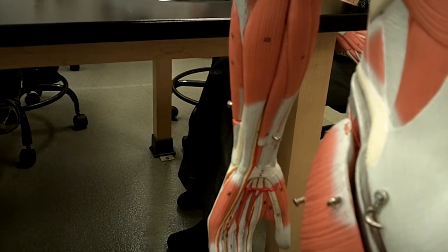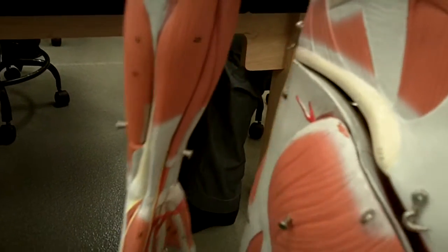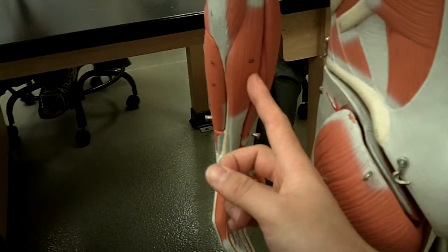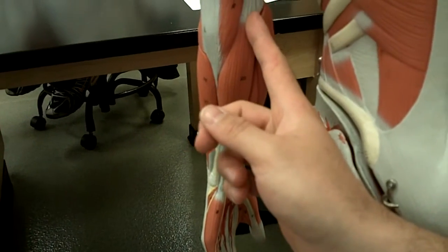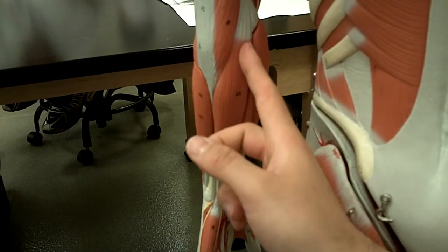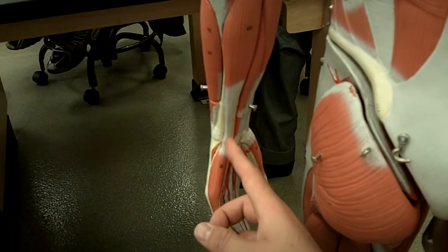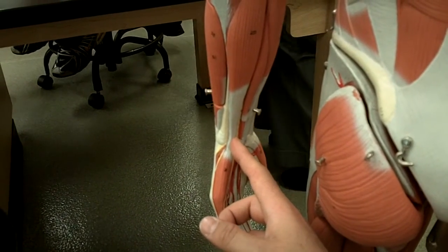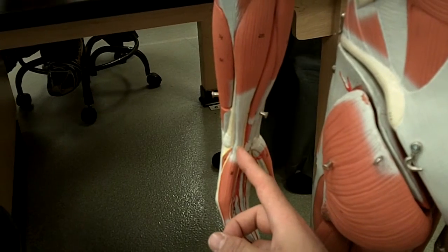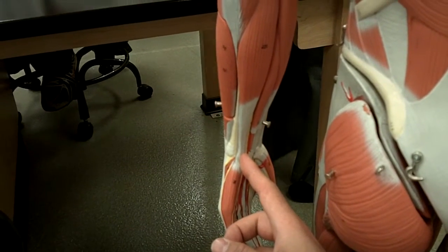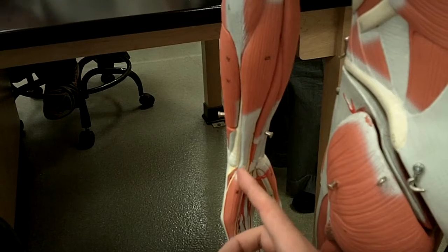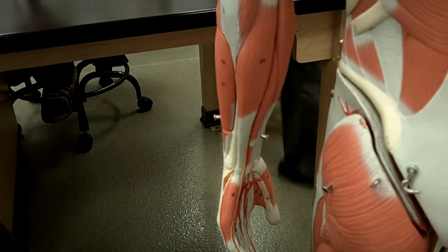The next muscle, just next door to that one, is the flexor carpi ulnaris, right here. This originates on the medial epicondyle and inserts on the base of metacarpal five, the pisiform, and the hamate. Its action flexes and adducts the wrist.